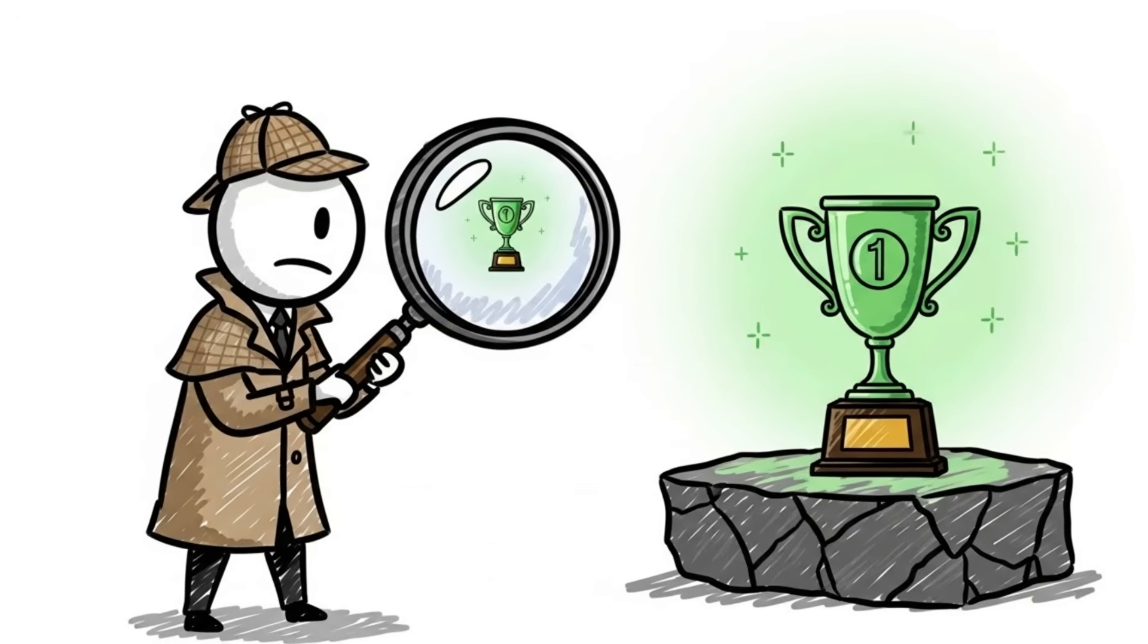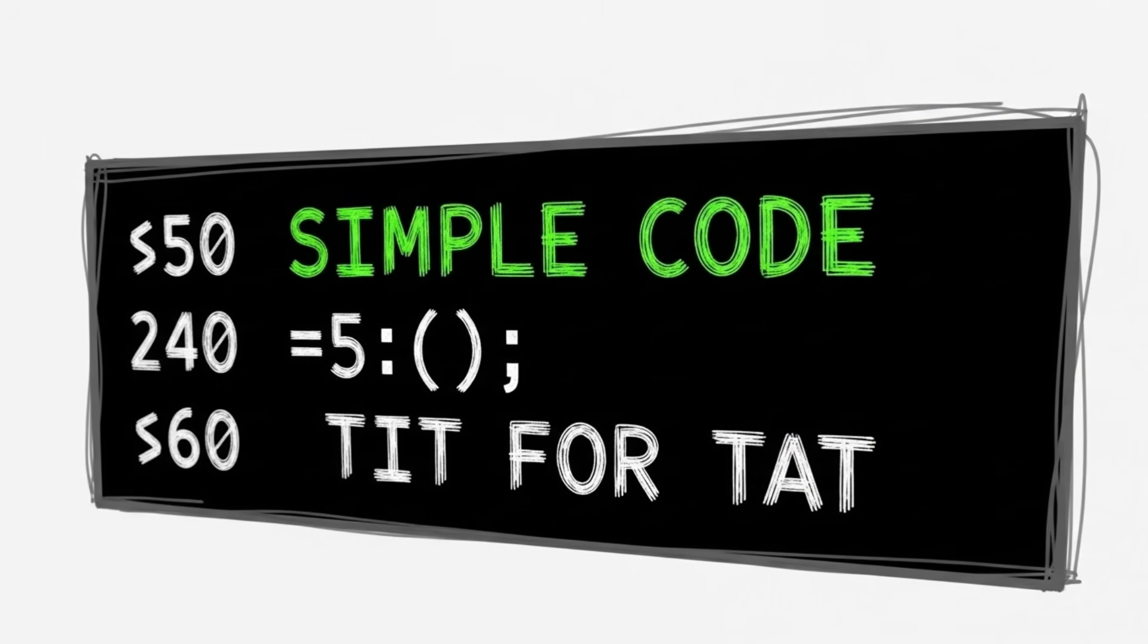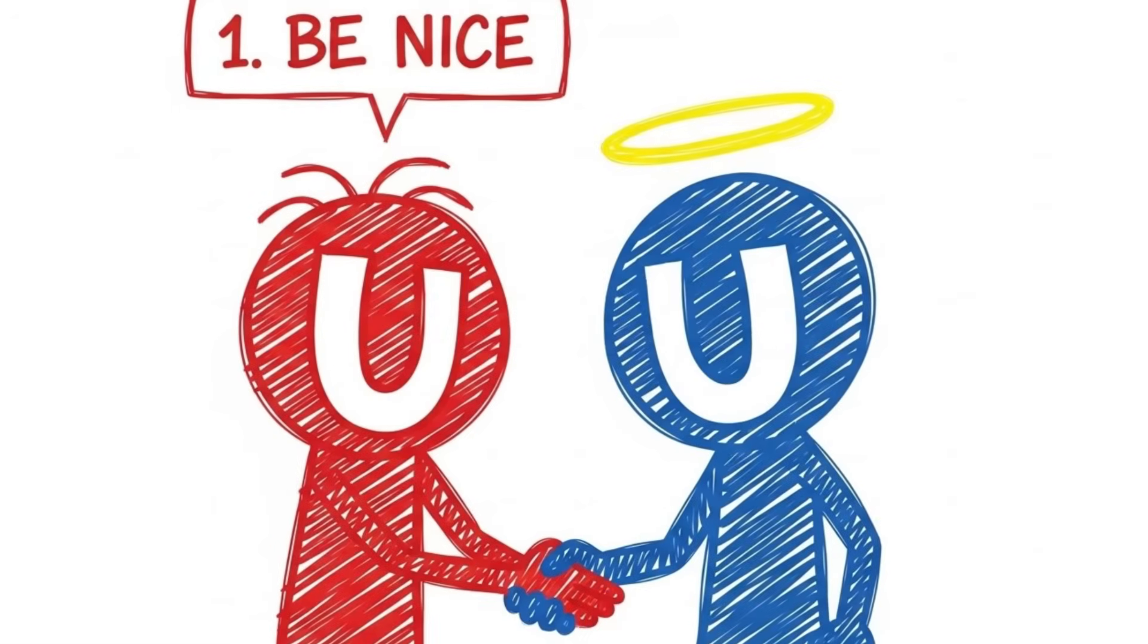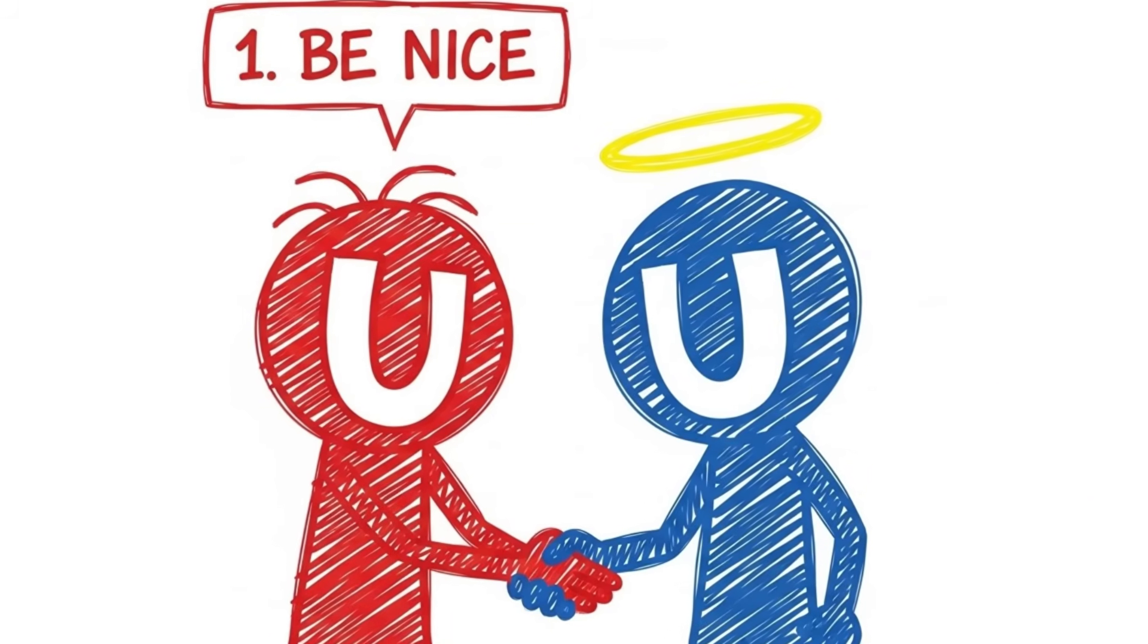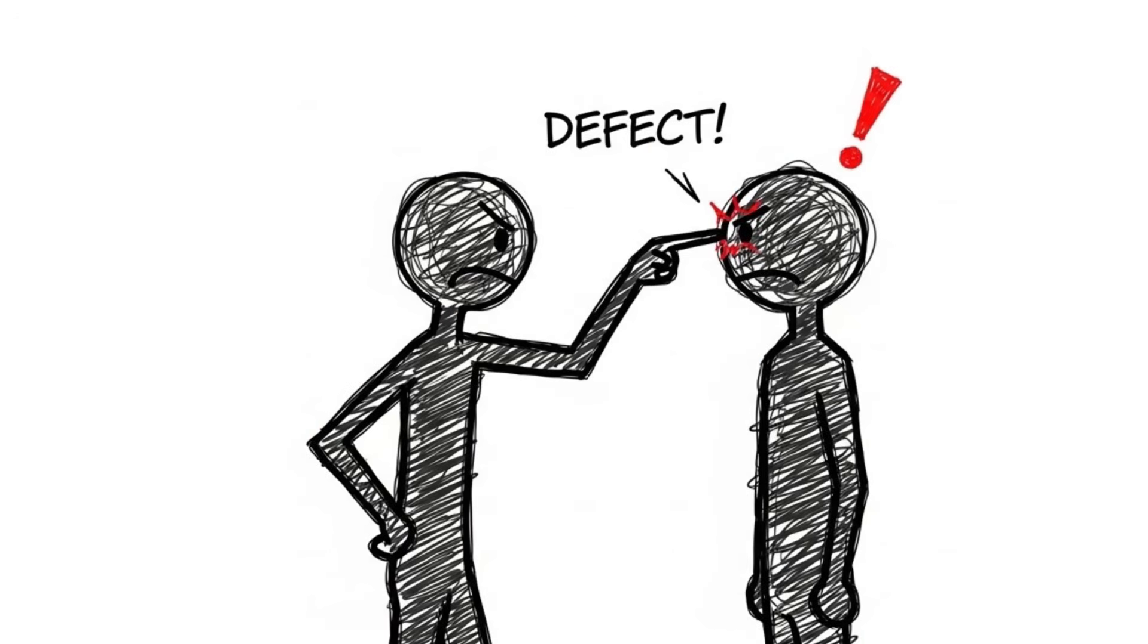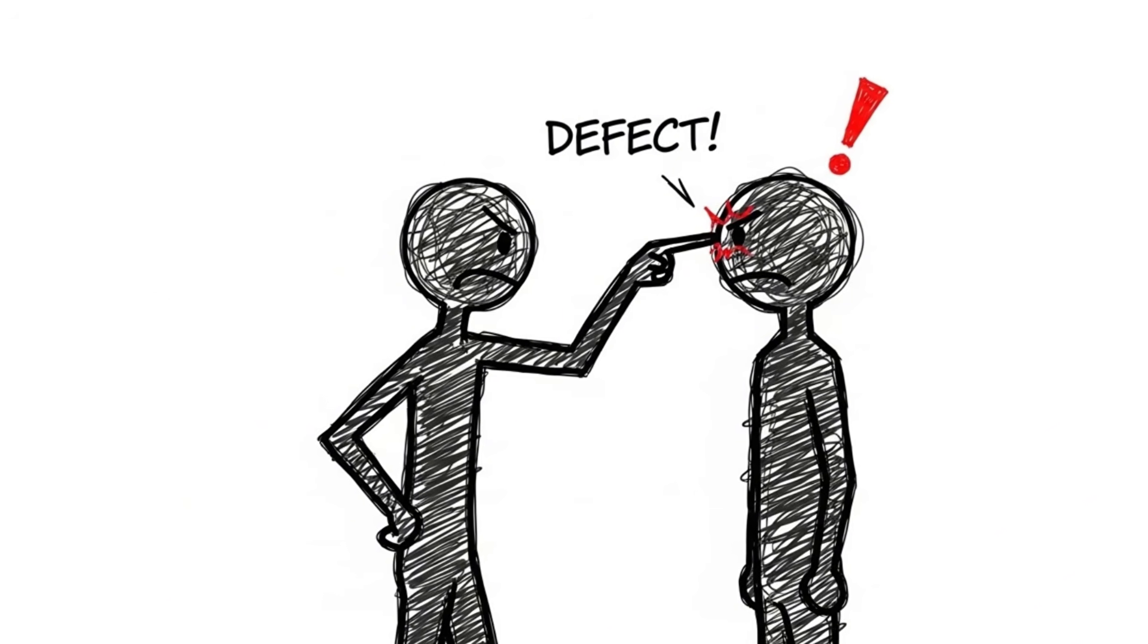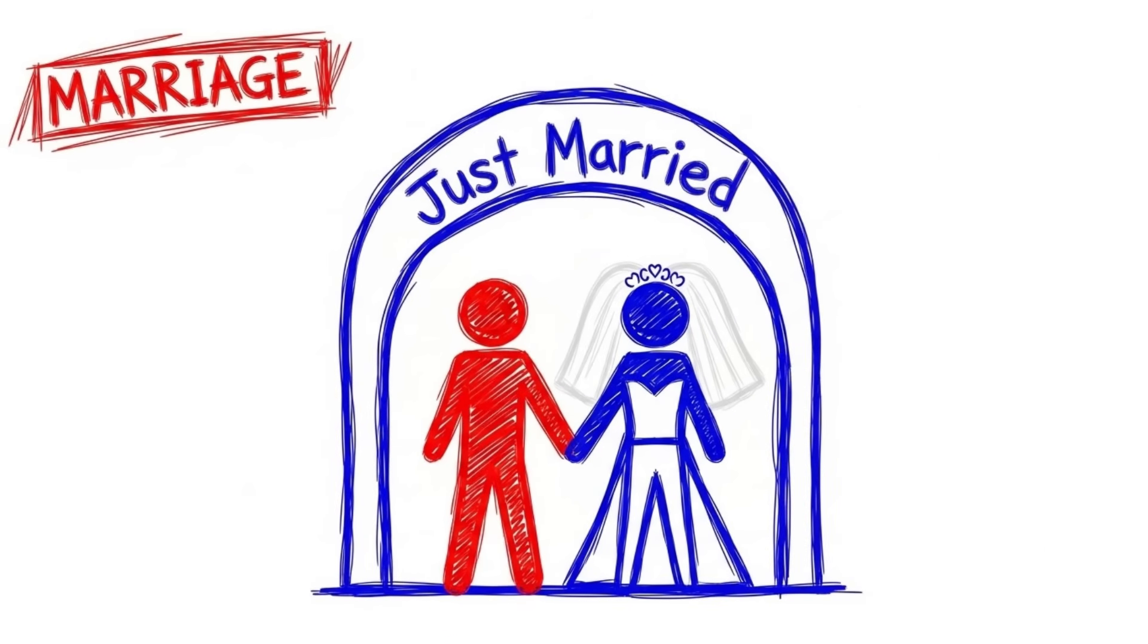The winner wasn't a complex, devious algorithm designed to exploit others. It was the simplest code in the tournament, written in just four lines of basic. It was called tit-for-tat. The strategy was simple. On the very first move, be nice. Cooperate. On every subsequent move, just do whatever your opponent did the last time. If they hit you, you hit back immediately. If they apologize and cooperate, you forgive them immediately and go back to cooperating.